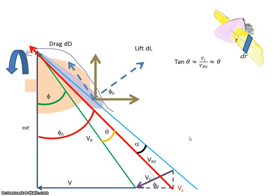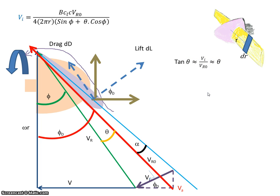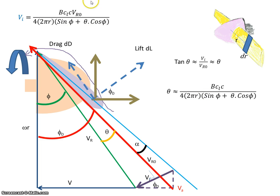Looking at angle theta here: assuming this right angle, the tan of the angle is opposite over adjacent, so tan theta is approximately equal to vi over vr0. Since theta is very small, tan theta is approximately equal to theta. So I have a value for vi, and dividing vi by vr0 gives theta. Taking that expression and removing the vr0 gives an expression for the angle theta.